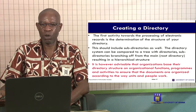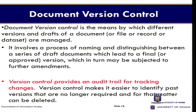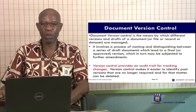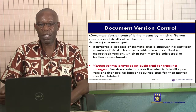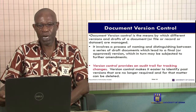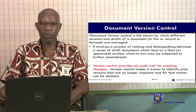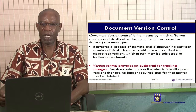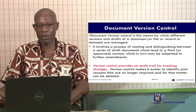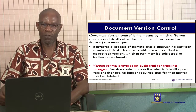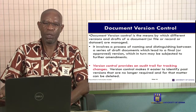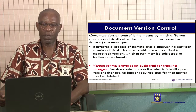Document version control is a means by which different versions and drafts of a document, file, record or data set are managed. It involves a process of naming and distinguishing between a serial draft document which leads to a final or approved version, which in turn may be subject to further amendments. For example, when writing an article or a long essay, you need version control — you need to name each draft to distinguish between the first and second drafts, because there will have been improvements. Without a naming convention, you would have to go through all your folders to identify what you are looking for.